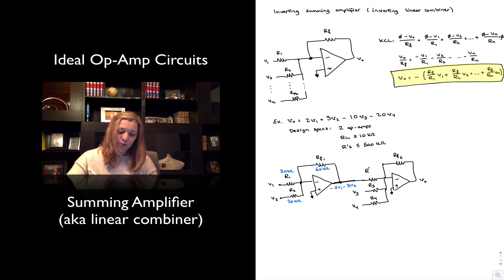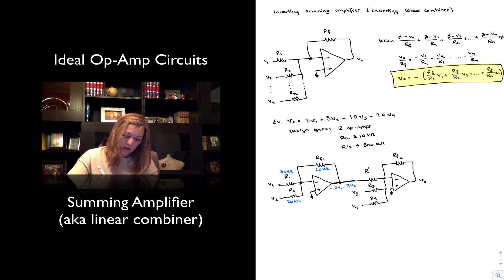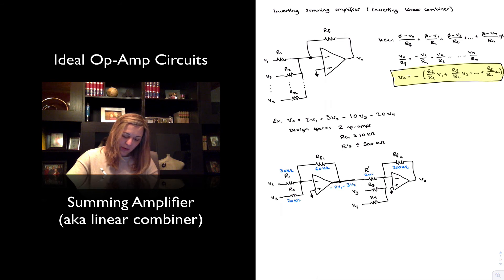And if I feed that through another summing, inverting summing amplifier. Here let's say RF2 since I'm going to have now ratios of 10 and 20 for R3 and R4 let's imagine that RF2 is equal to 200k. And if I make R prime the same value then I will not modify the weights on my V1 V2 signals I'll just modify the sign so basically multiply it times negative 1. And then R3 I want a ratio of 10 so R3 should be 20k ohms and R4 I want a ratio of 20 so it will be 10k ohms.